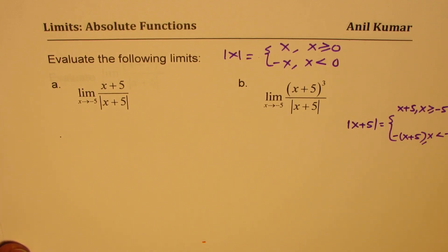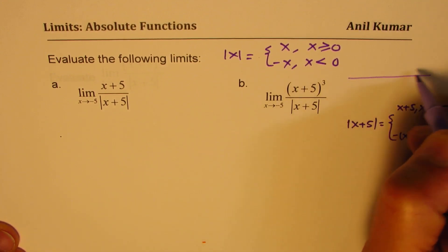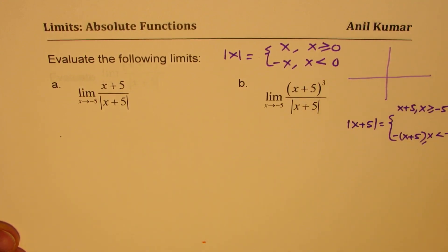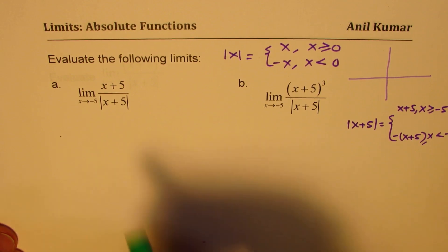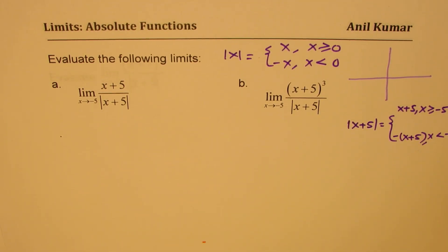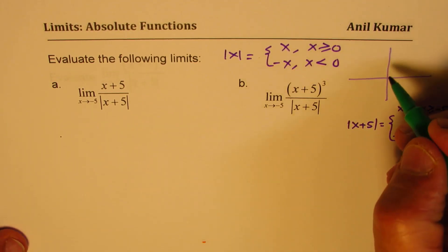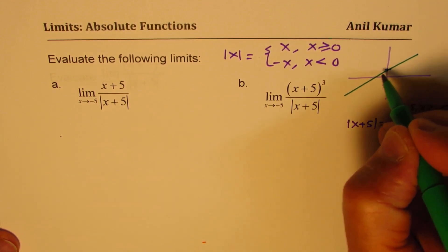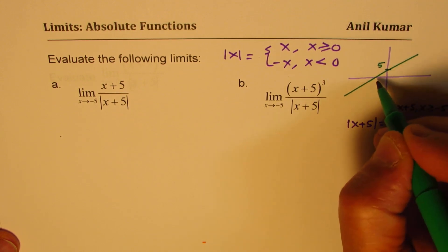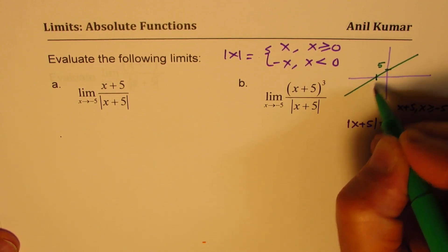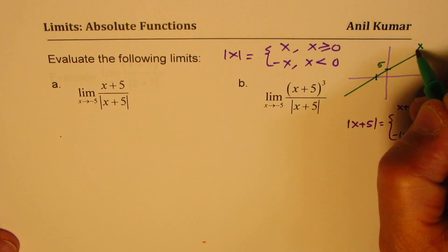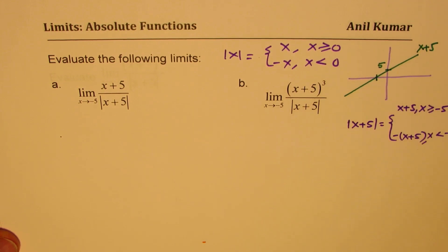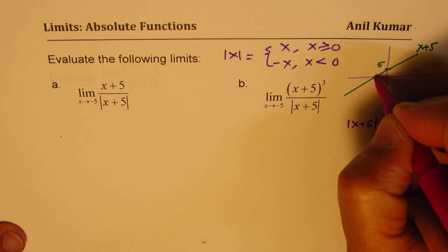The concept is: x+5 is basically a line. It's a line where the function equals 0 at x equals minus 5. When we say absolute value of (x+5), absolute value is always positive.